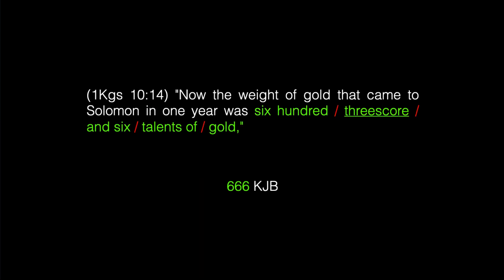The number 666 first occurs in 1 Kings 10:14: 'Now the weight of gold that came to Solomon in one year was 600 threescore and 6 talents of gold.' 666 is encoded here in the King James Bible — the phrase '600' combined with 'threescore' — case sensitive — the phrase 'and 6,' the phrase 'talents of,' and the word 'gold' all combined appear 666 times in the King James Bible.